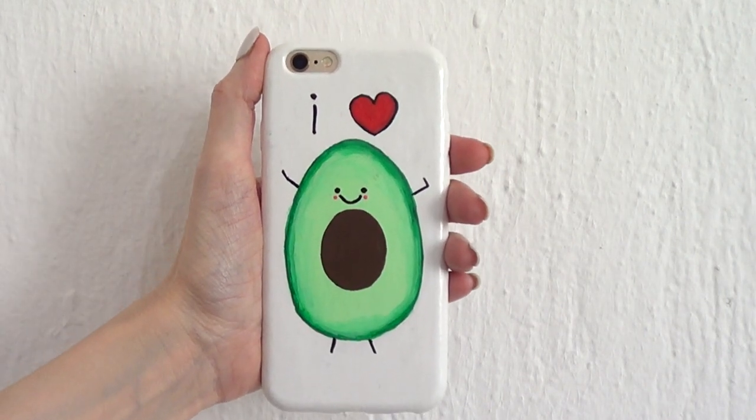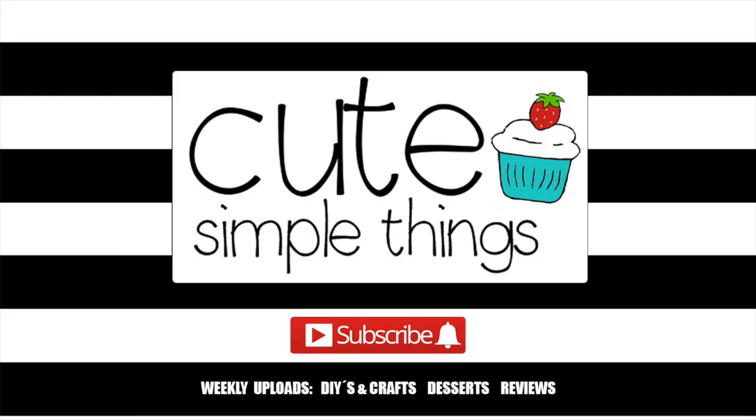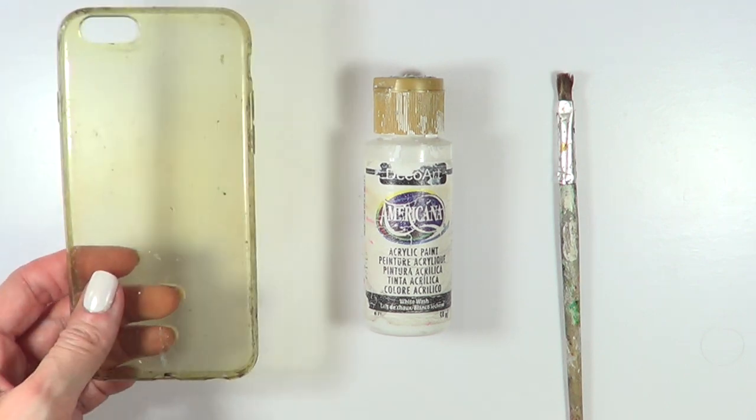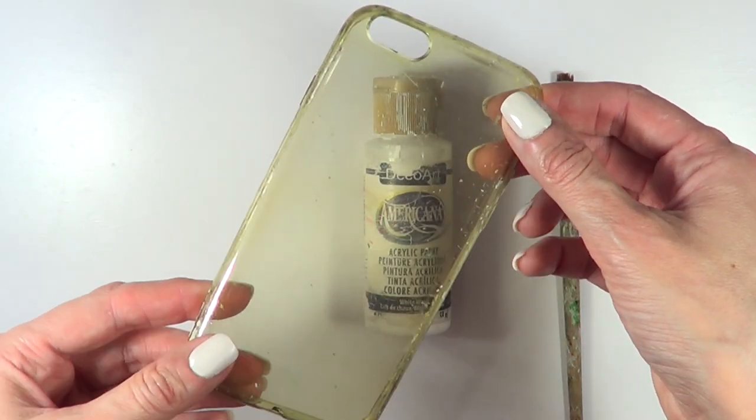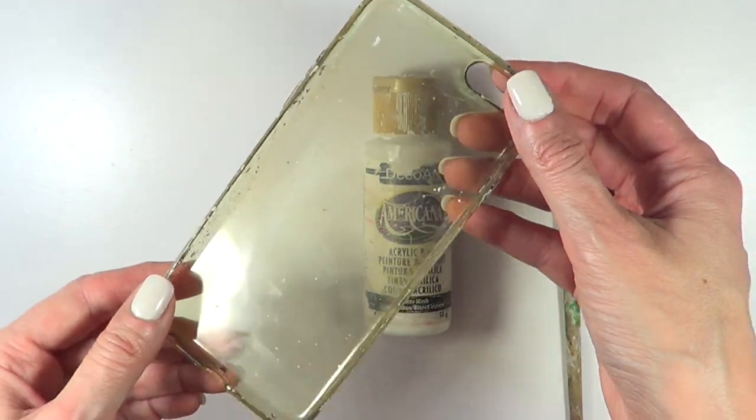Hey guys, it's Renee. Welcome to this avocado phone case DIY. This one is actually pretty easy and cute. We are going to be needing a phone case. Now the one that I'm using is pretty old and used. As you can see, it used to be clear just so you can get an idea of how old this is.